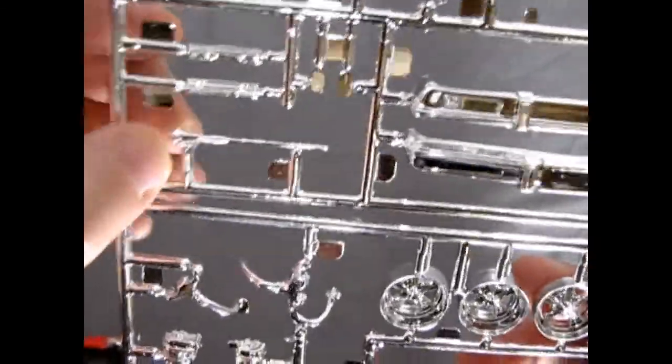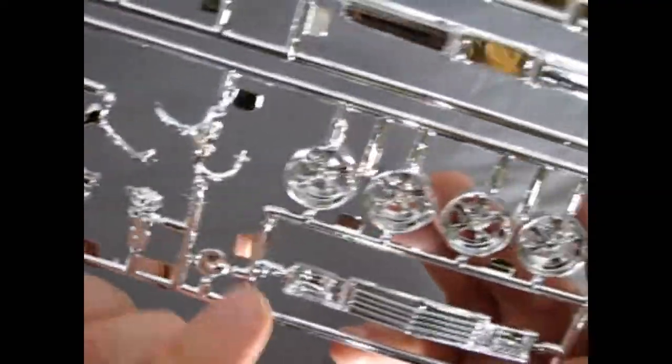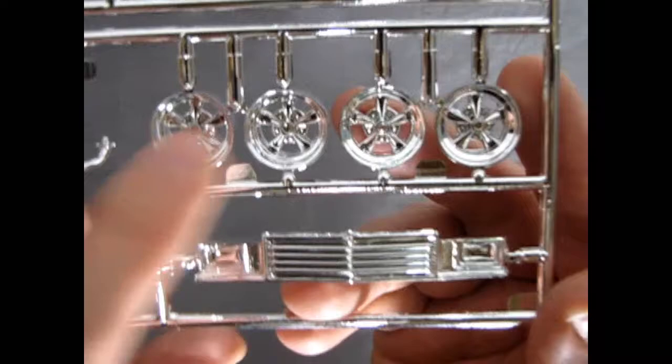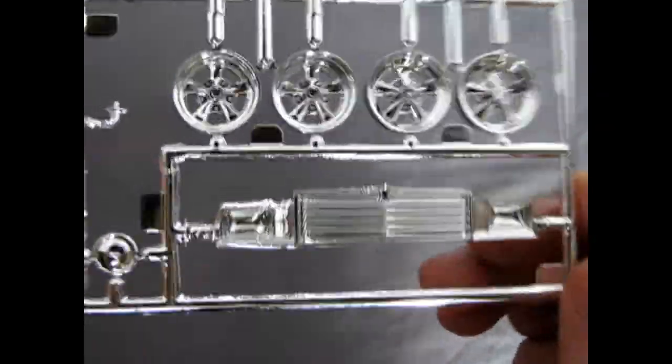the valve covers, our CB whip antenna, our exhaust manifolds, and that nice blower assembly up there, as well as these very beautiful looking mag wheels, and our front grille with the headlights in there.